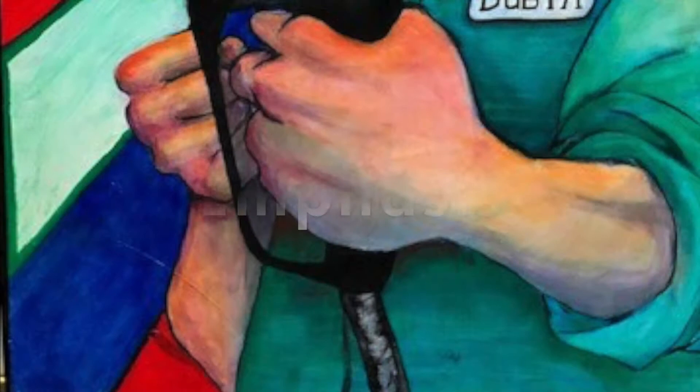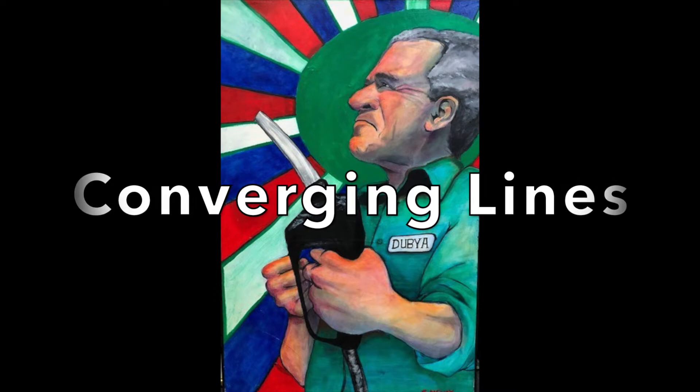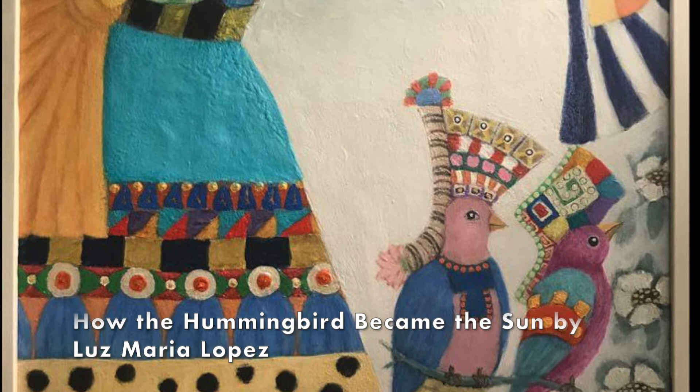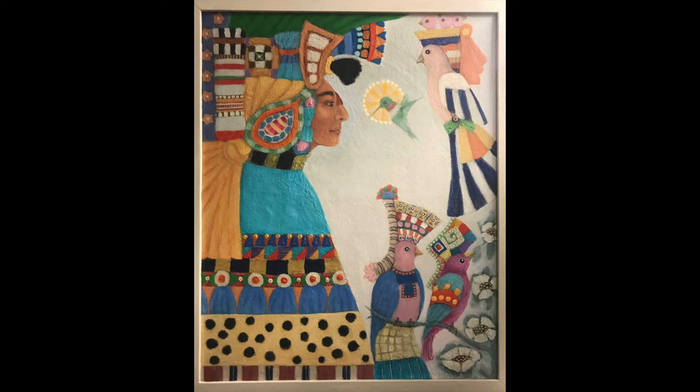Artists use emphasis to draw your attention to the focus of the artwork. Here, the artist uses lines that point to or converge on the main subject of the painting. Another way to emphasize the focal point of your painting is to isolate it or put it in a place all by itself, like this hummingbird, which is the focal point of the painting called 'How the Hummingbird Became the Sun.'